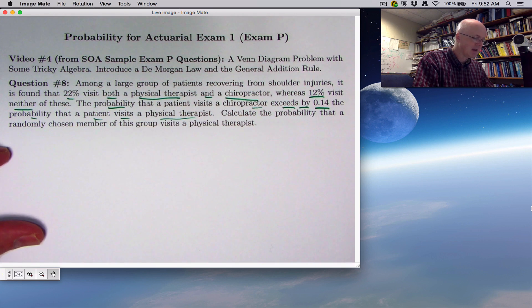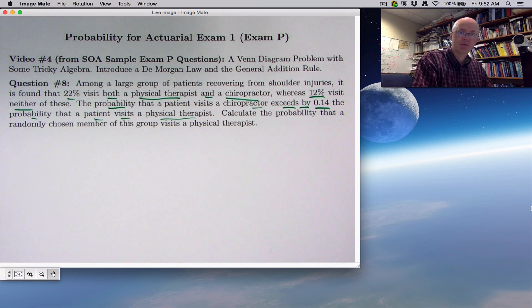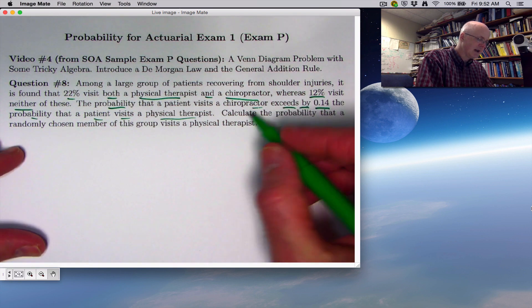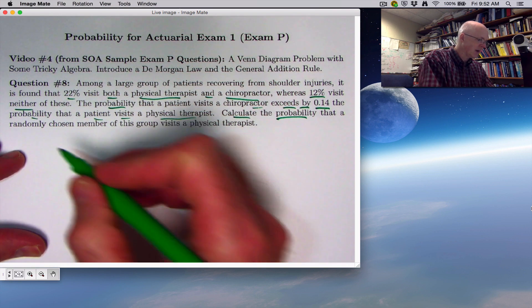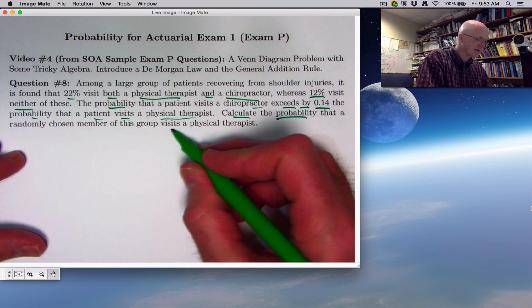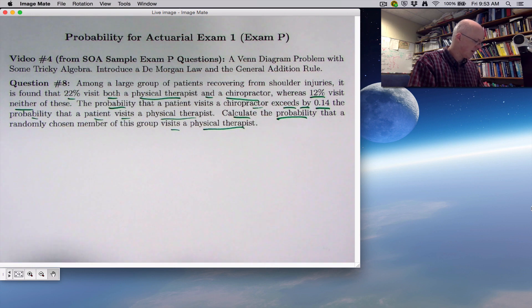The probability that a patient visits a chiropractor exceeds by 0.14 or 14% the probability that a patient visits a physical therapist. The goal is to calculate the probability that a randomly chosen member of this group visits a physical therapist.